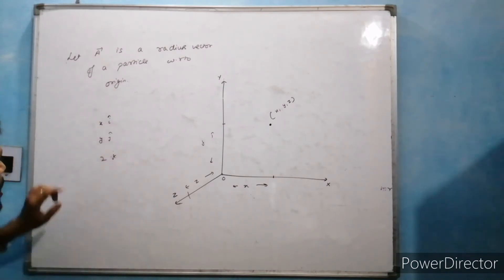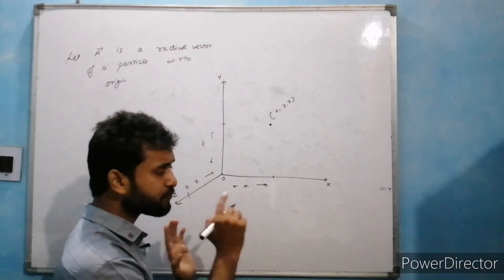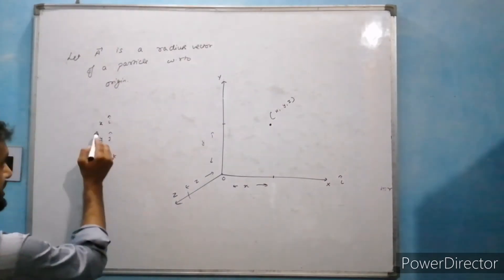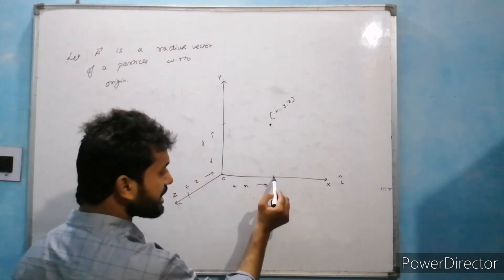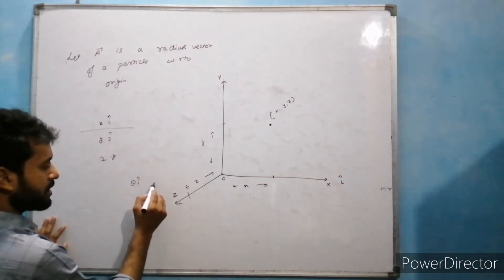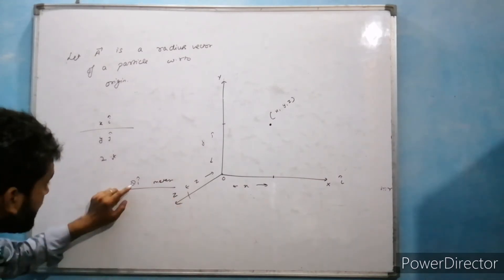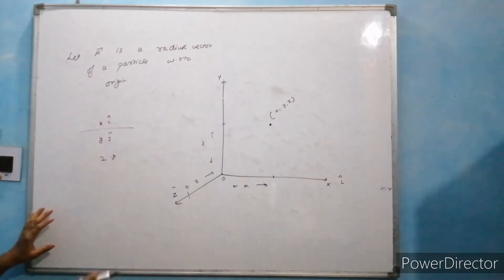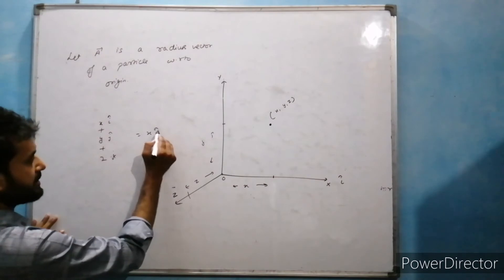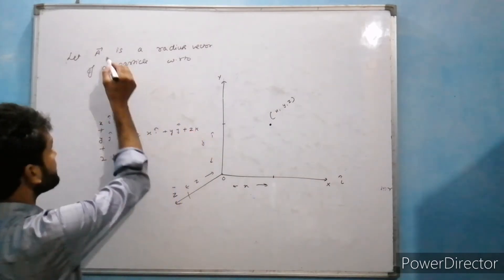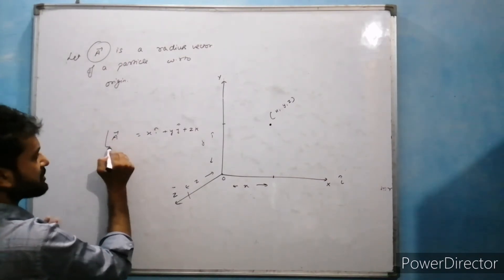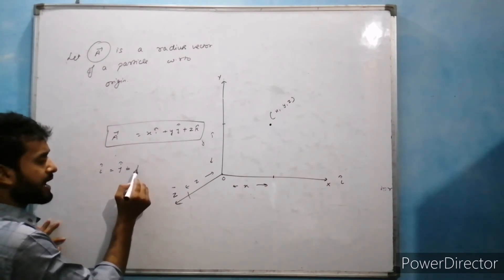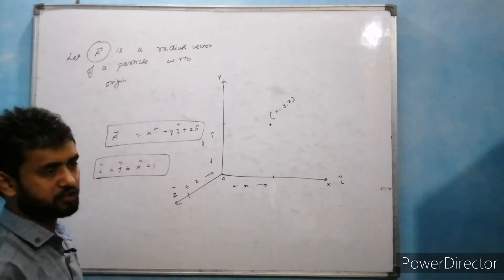हमेशा i, j, k small letters में होंगे और इन्हें unit vectors कहा जाता है — यह सिर्फ direction बताते हैं। अगर कोई भी vector x axis के along होगा तो आप उसे ऐसे represent करेंगे। मान लीजिए एक particle origin से 8 meter दूरी पर है along x axis, तो आप लिखेंगे 8i meter। i cap, j cap और k cap की value 1 के बराबर होती है, इसलिए इन्हें unit vectors भी बोलते हैं। तो vector a को आप xi + yj + zk के रूप में represent करेंगे।